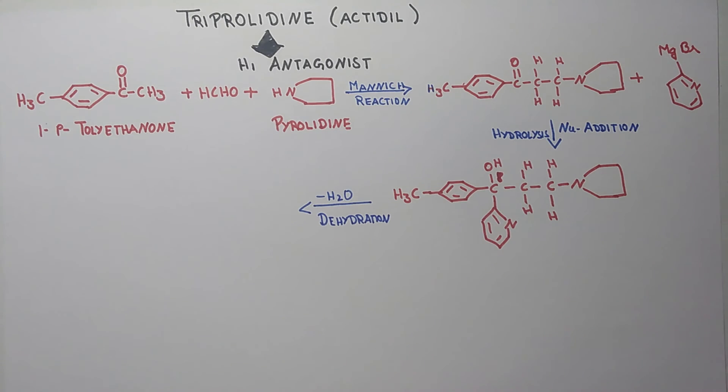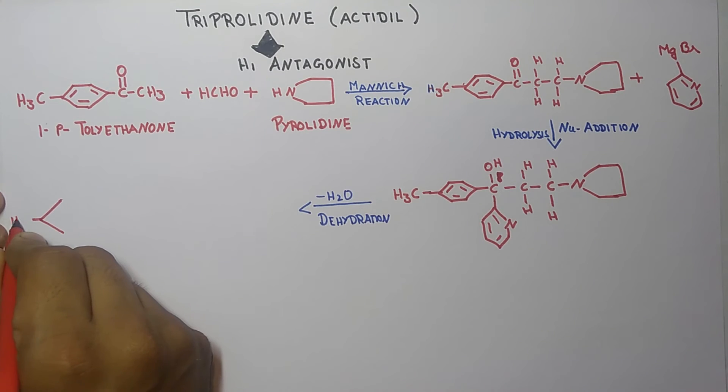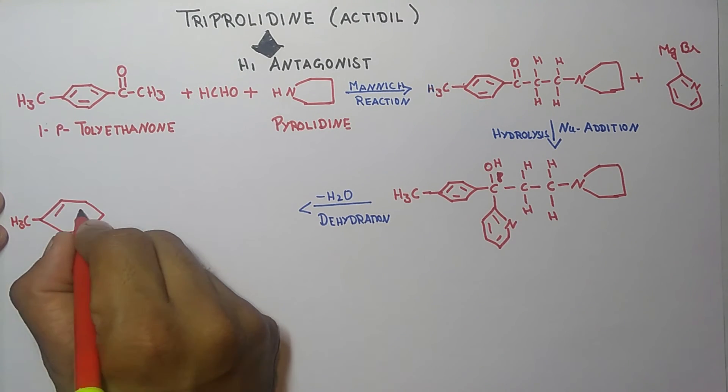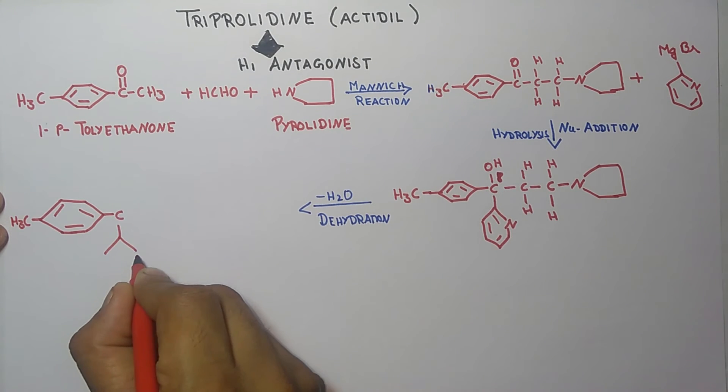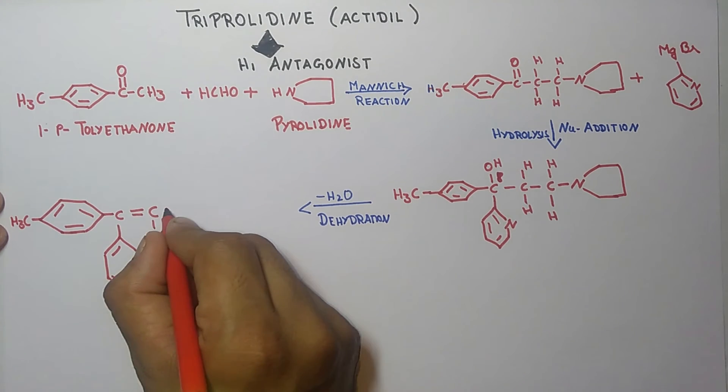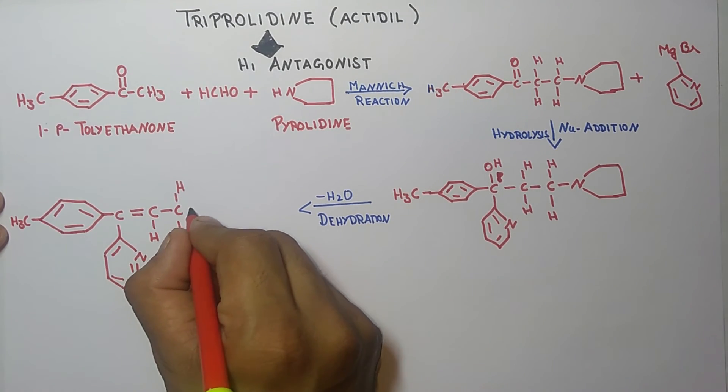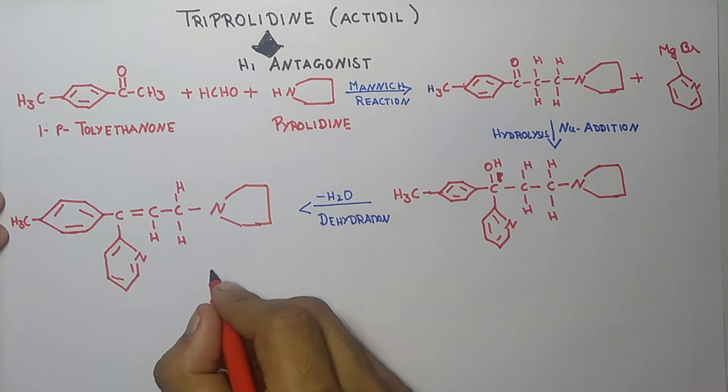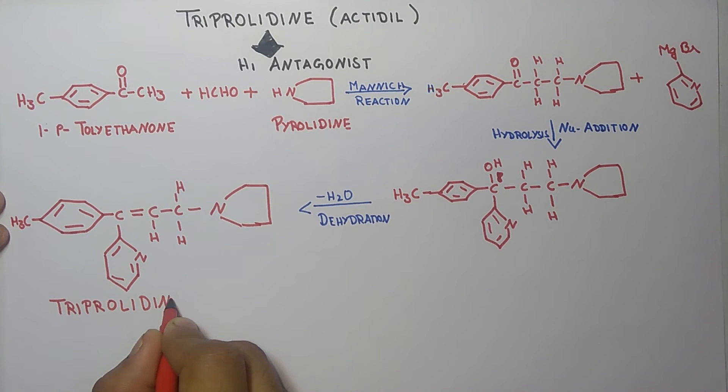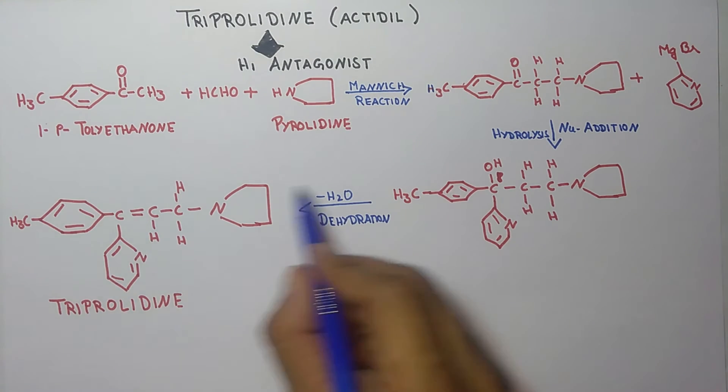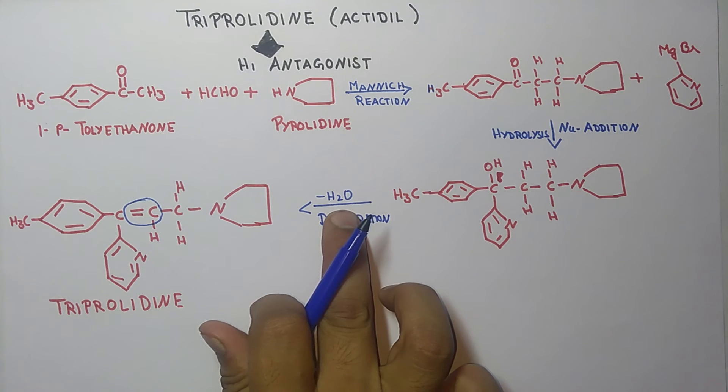Now we will get the final structure of triprolidine. What will happen is the removal of H2O, so students there will be removal of this molecule. Now we will get the double bond instead of this molecule. This will appear after the removal of H2O, so the final product is triprolidine.